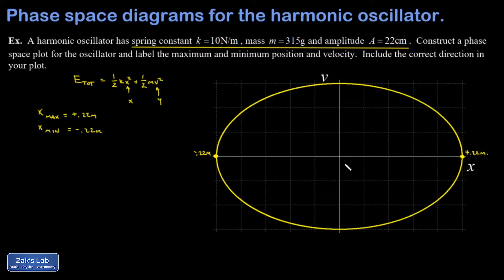When x is 0, v is going to reach its maximum positive and negative values. Those are a little trickier to get. What I'm going to do is say the total energy in the oscillator is one-half ka squared. That's a convenient way of measuring the total energy. That's where x is equal to its maximum value and there's no kinetic energy, so it's all spring potential.